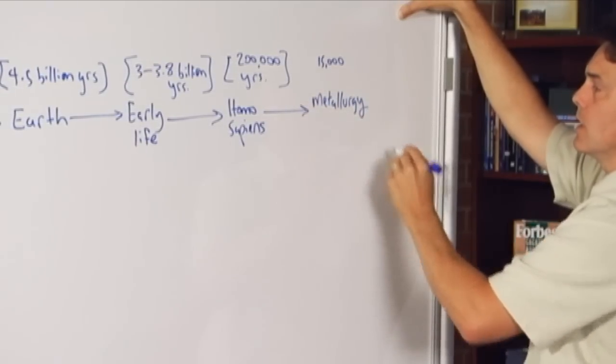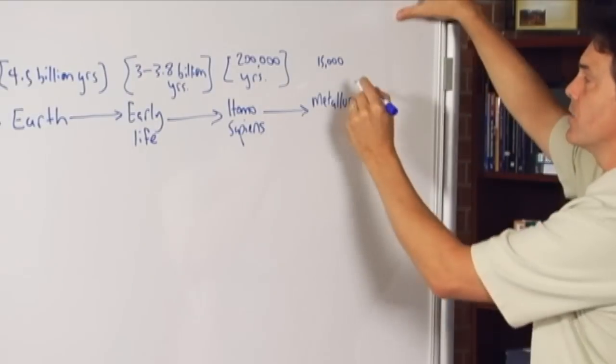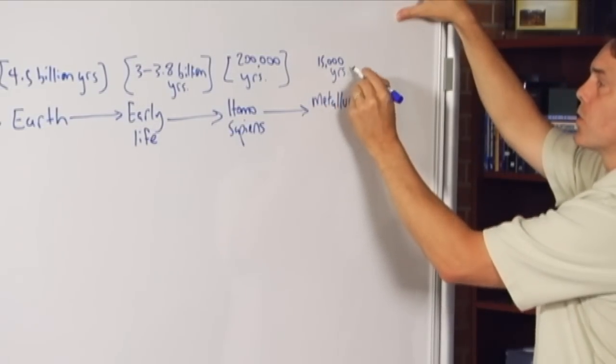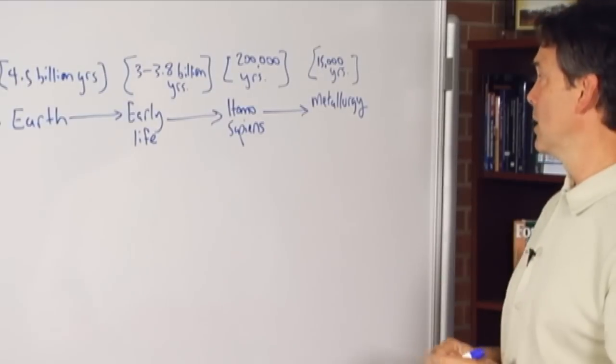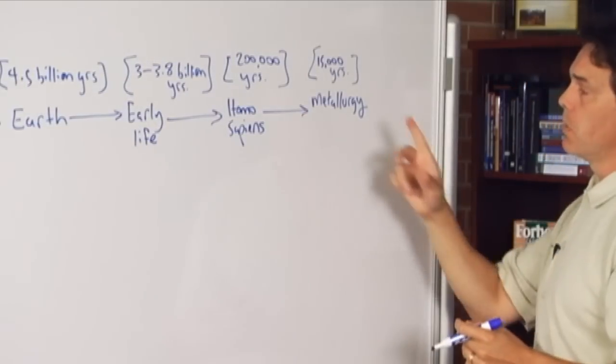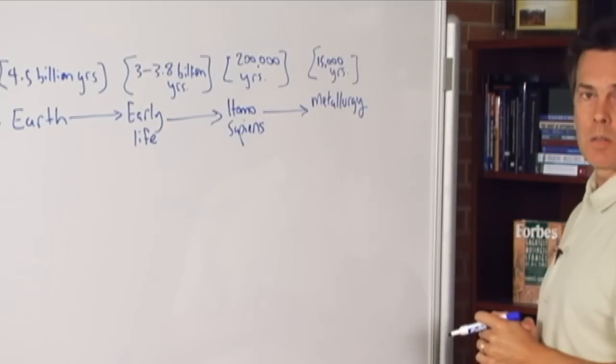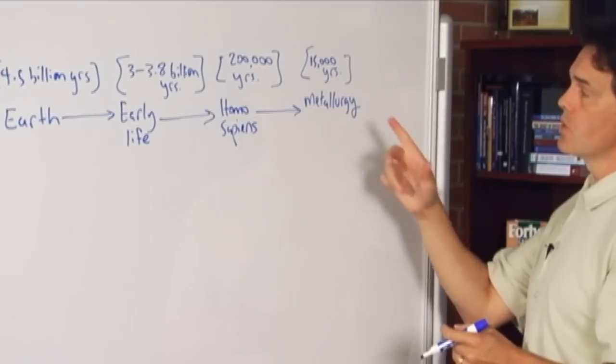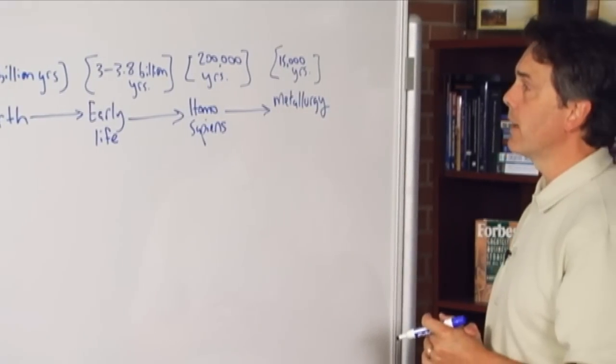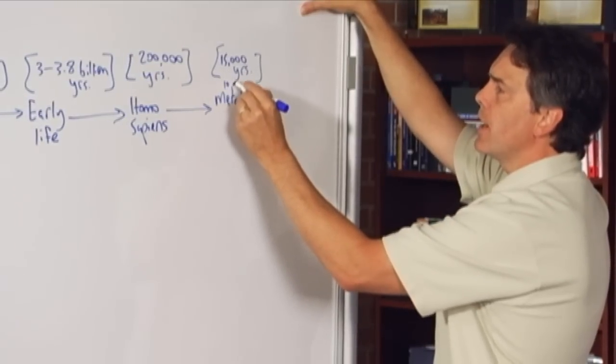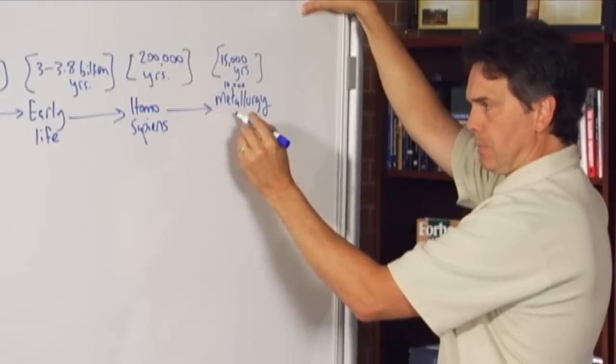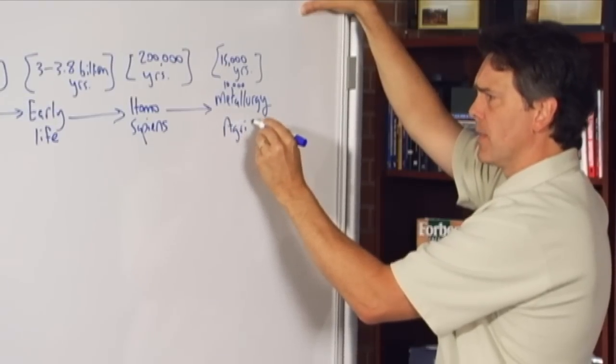As far as we can tell, the Hittites, around 15,000 years ago, started to work in iron. There had been some primitive working in copper and some of the softer metals, but iron being the powerful metal that it is, with all of the uses that marks a dramatic advancement. And then shortly thereafter, at about 10,000 years ago, there's the development of agriculture.